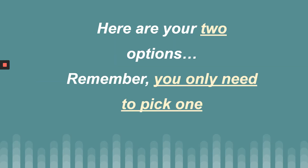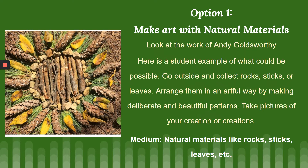So here are your two options — you only need to pick one. Working with natural materials: you can look at Andy Goldsworthy's work and see the student example. You're going to go and arrange them — you might do a radial design where everything comes from the center, kind of like the sun, or maybe something more like a spiral. Take several pictures, don't just take one, and check your pictures before you let the wind take your project away. Make sure you don't have a shadow of your camera over the picture — that was happening a lot with the last assignment. Make sure your pictures are good because that's part of your grade.